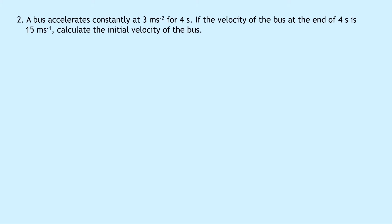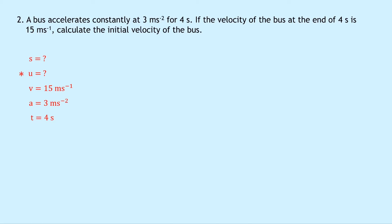Question two says that a bus accelerates constantly at three meters per second squared for four seconds. If the velocity of the bus at the end of four seconds is 15 meters per second, calculate the initial velocity of the bus. So we're trying to find U in this question. S equals question mark — again we don't know the displacement. We're trying to find U. We know that V equals 15 meters per second, the acceleration is three meters per second squared, and the time is four seconds. So I'm putting a star next to U, the one I'm trying to find.